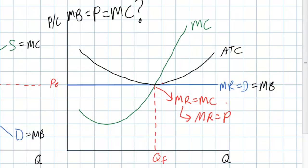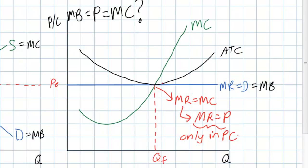The change in total revenue from increasing output by one unit — the marginal revenue — will always equal the price in perfect competition. This is only true in perfect competition. In other market structures, marginal revenue is always lower than the price the firm can charge, so allocative efficiency will not necessarily be achieved. But in perfect competition, because marginal revenue equals price and firms produce where marginal revenue equals marginal cost, the result is that price will always equal marginal cost.